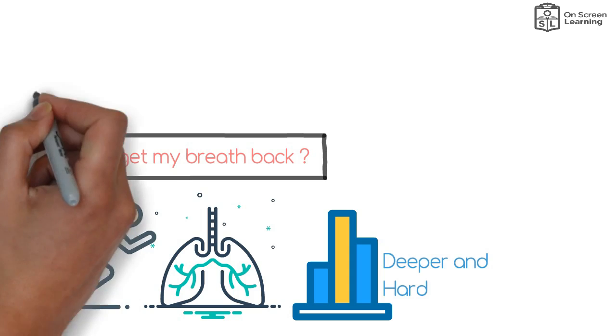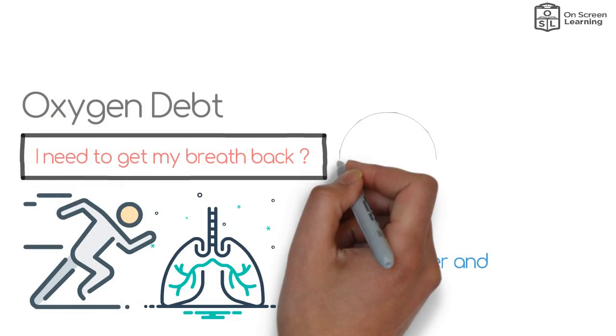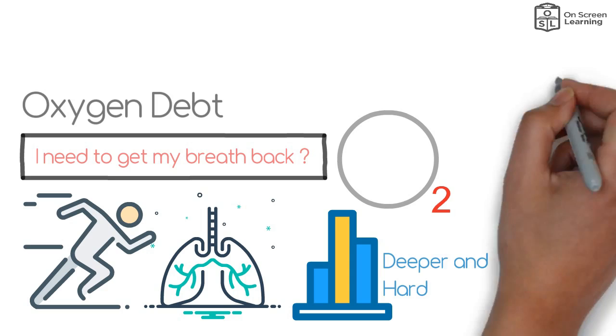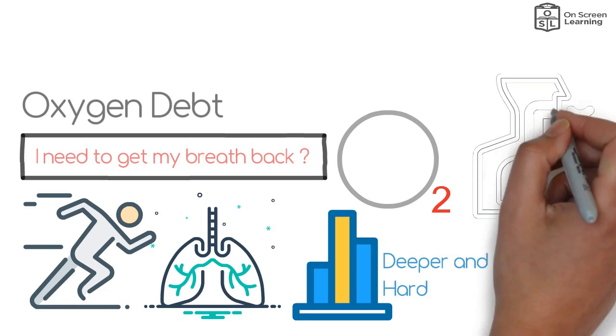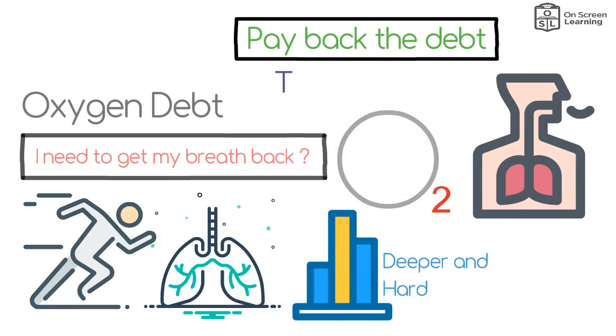This part of the recovery process is called oxygen debt. Oxygen debt is the amount of additional oxygen demanded by muscle tissue to oxidize lactic acid following activity. The body must proceed to breathe deeply once exercise has concluded in order to pay back the debt. This is also called the afterburn.